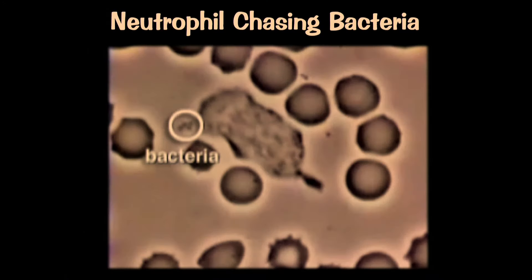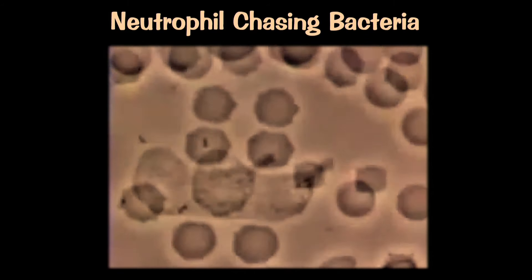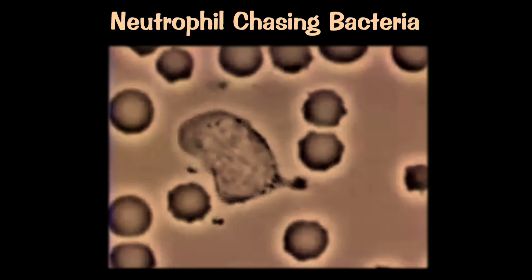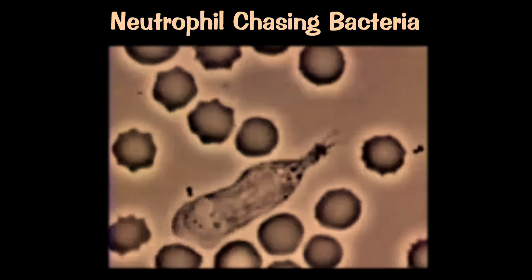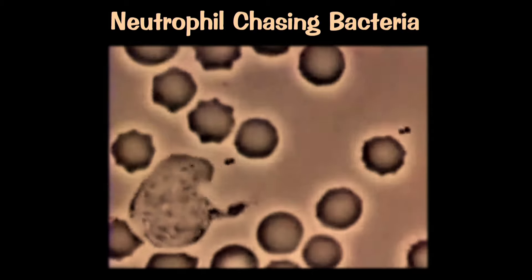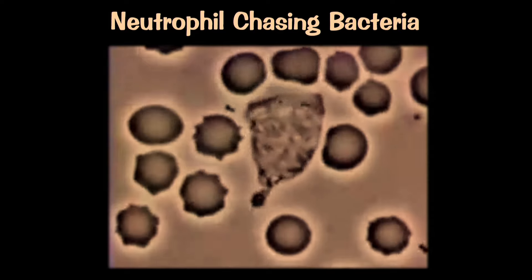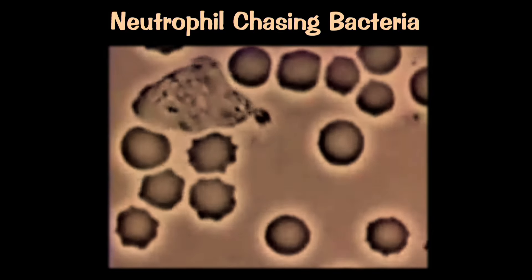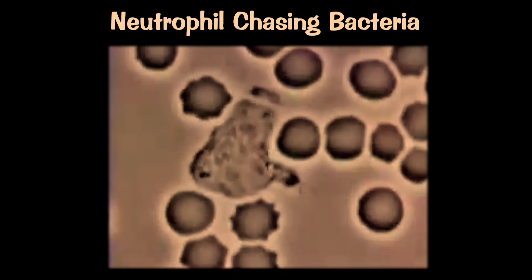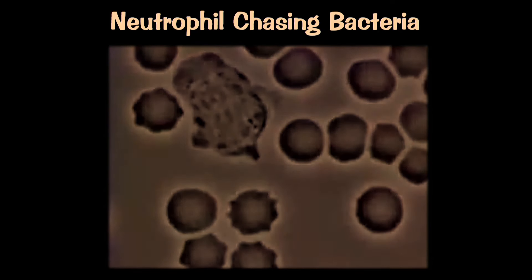Watch this video — it shows a neutrophil chasing down a bacteria. You have autonomous cells running around inside your body, moving in an amoeboid manner — the same way single-cell organisms called amoeba move. White blood cells run around the body looking for things that shouldn't be there and eat them. The macrophage is a bigger version of a neutrophil — a neutrophil can eat about 10 bacteria before it dies, while the macrophage, the big eater, can eat about 100.